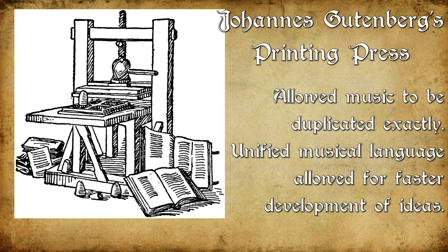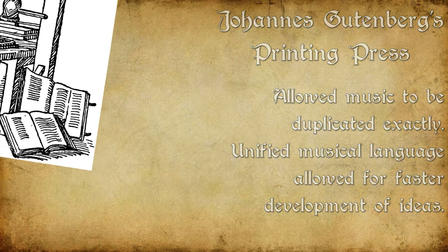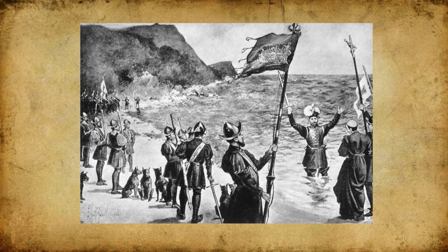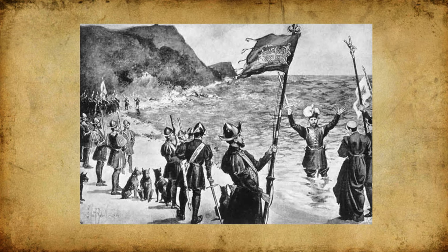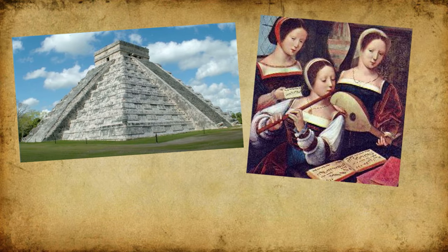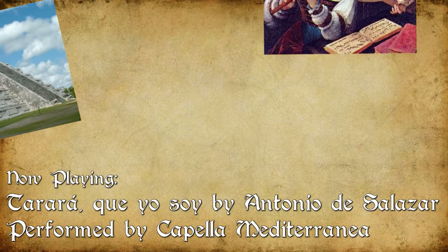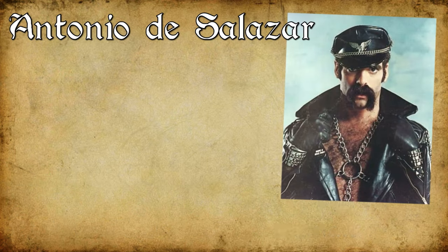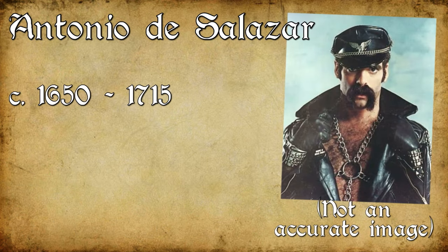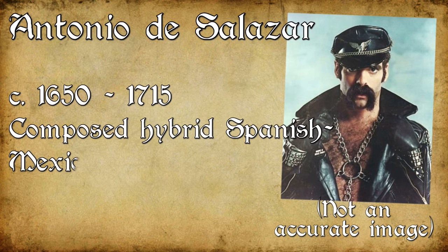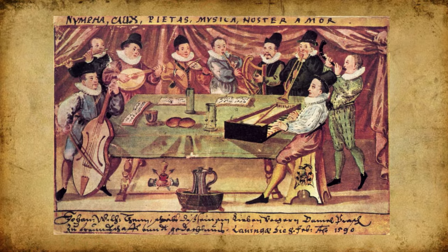The printing press was able to exactly duplicate manuscripts for commercial distribution. We also see the diversification of musical styles in this time. An interesting example is the European-Mexican hybrid works from the Spanish invasion of Mexico, making use of native Mexican language and European musical practices. Antonio de Salazar was a Spanish composer who moved to Mexico in his 30s around 1688 and would eventually rise to a position in Mexico City Cathedral.